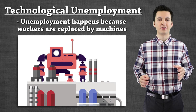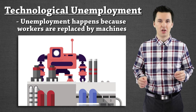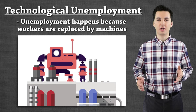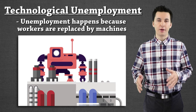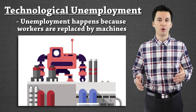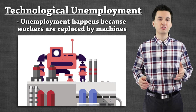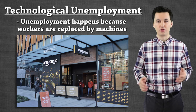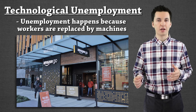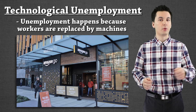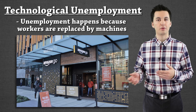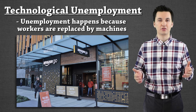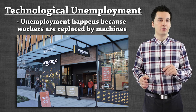The last type of unemployment is technological unemployment — a big issue today in the United States and many countries. Automation and a growing focus on technology have started to replace a lot of workers. Amazon recently announced the Amazon Go store, which no longer needs cashiers: you walk in, scan your phone, put whatever you want in your basket, walk out, and it automatically charges you. That's going to eliminate a lot of jobs as this technology catches on.